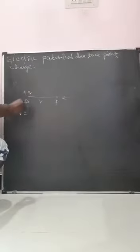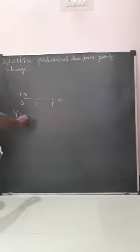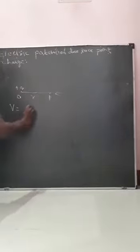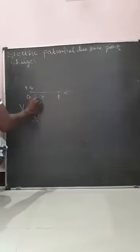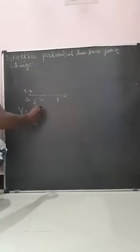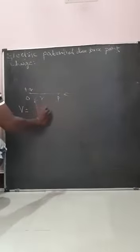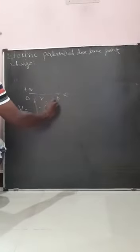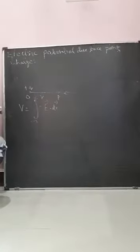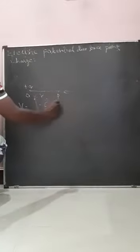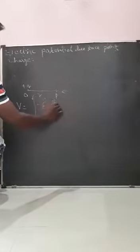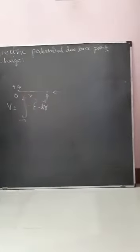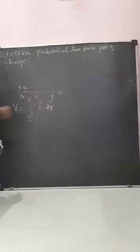Then the electric potential at the point P is V, which is equal to the integration from infinity to R of minus E vector dot dr vector. This is the electric potential at point P — this is the equation V.